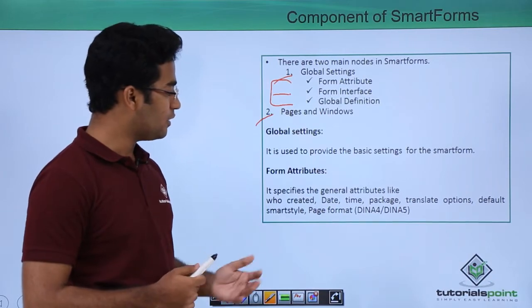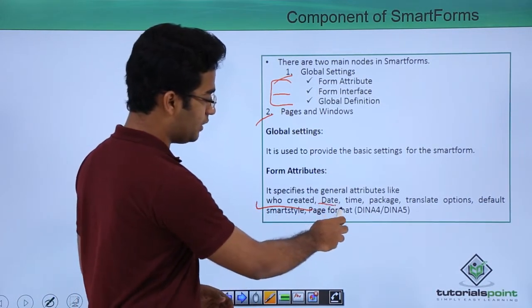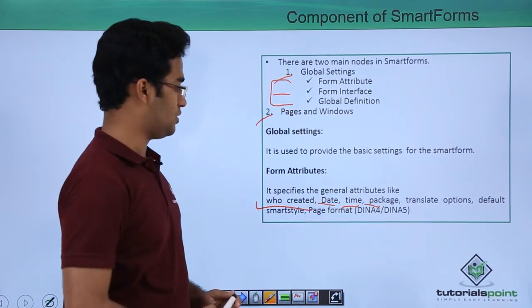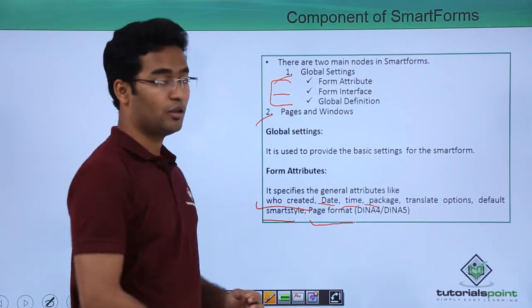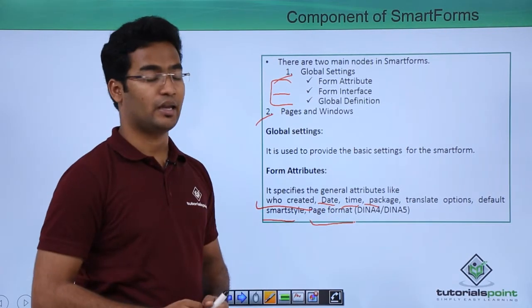Form Attributes specifies the general attributes like who created it, date, time, package, translate options, default smart styles, and page formats. Page formats here can be DINA4 or DINA5.